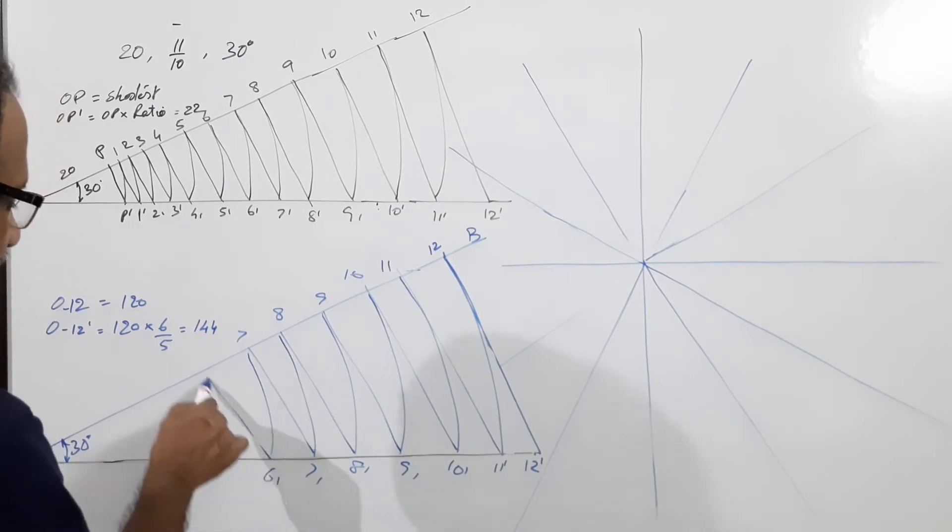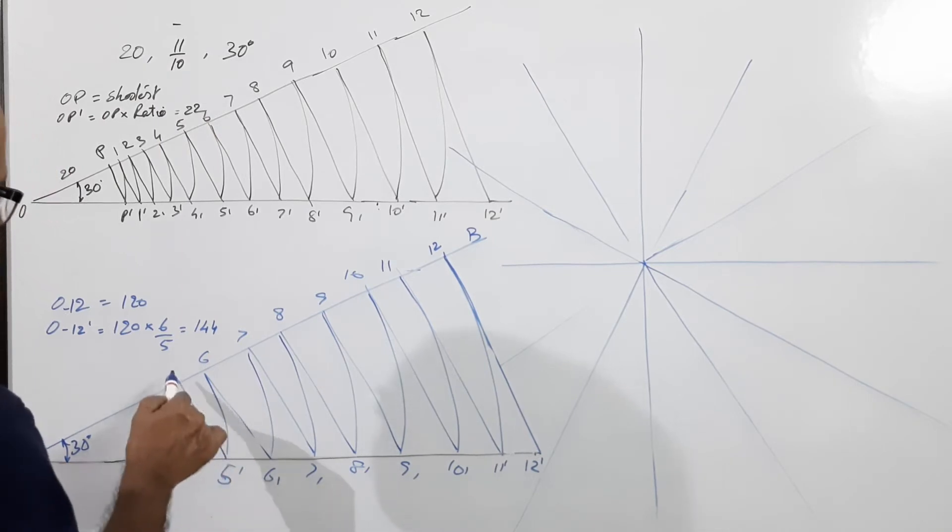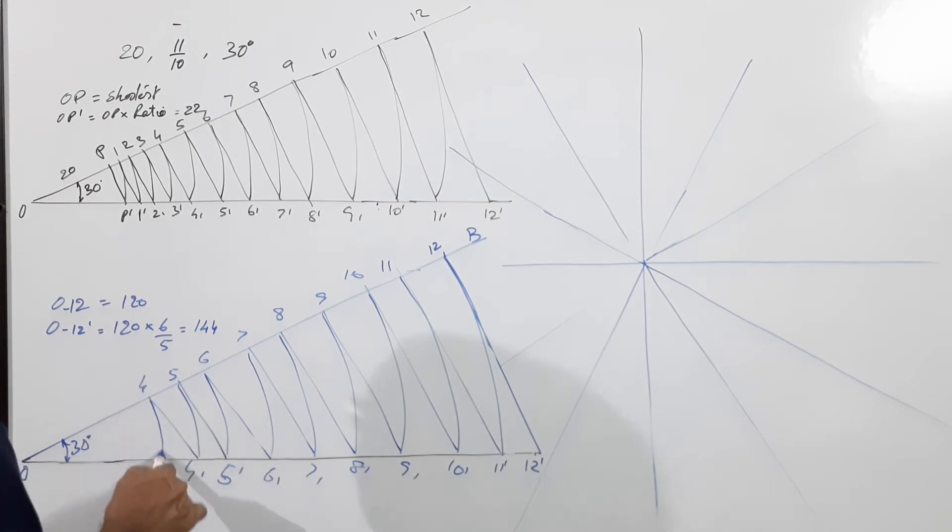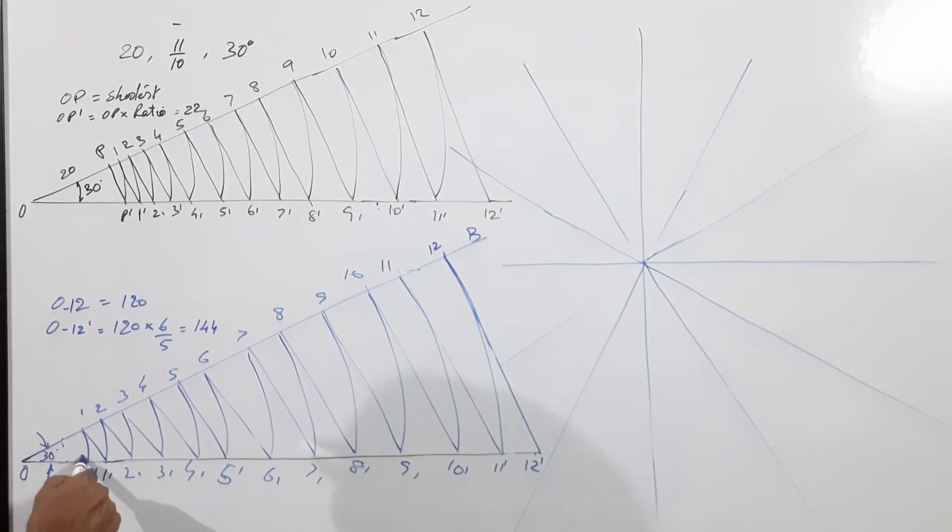Continue with 6 dash, 6, 5 dash, 5, 4 dash, 4, 3 dash, 3, 2 dash, 2, 1 dash, and P dash, P.